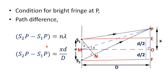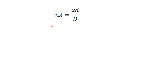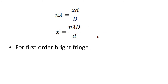Comparing these two equations, the LHS of both equations is the same. So we can compare the RHS: n lambda equal to xd divided by capital D. By rearranging this equation, we can write x equal to n lambda d divided by capital D. This is the general equation.